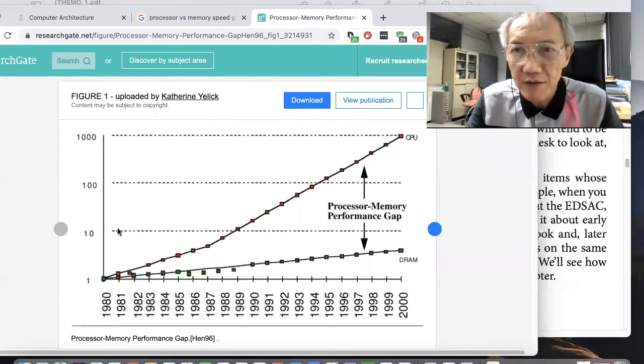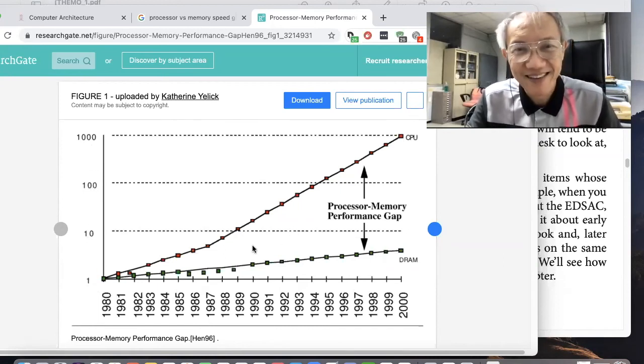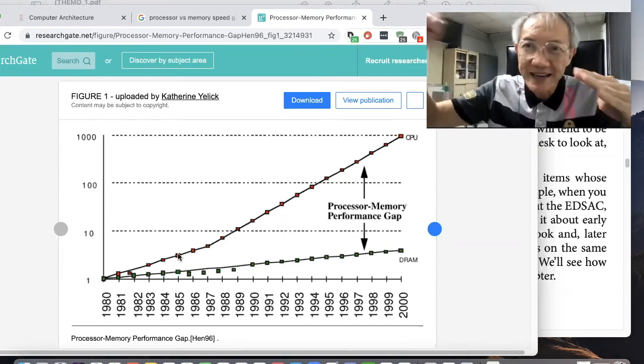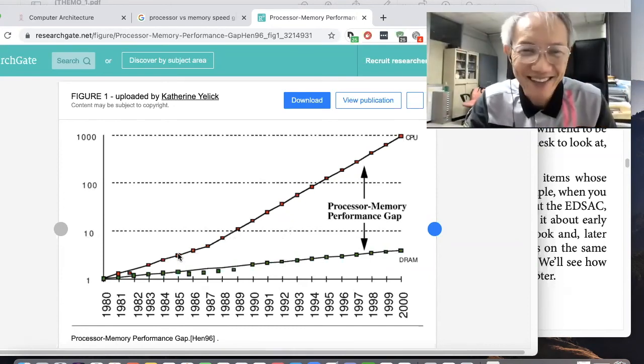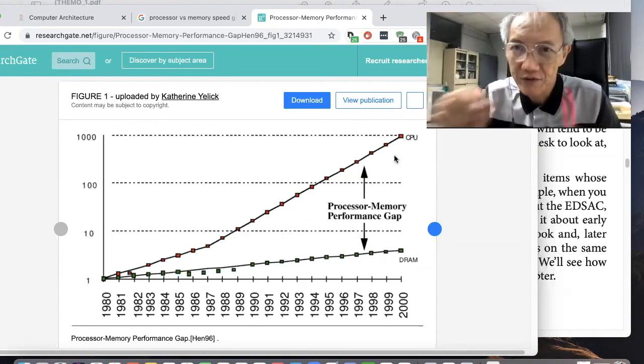The vertical is performance. It's also log scale. You have to be careful, right? One, 10, 100,000. So everything straight line here is mean exponential. The red line is CPU speed. So CPU improve.